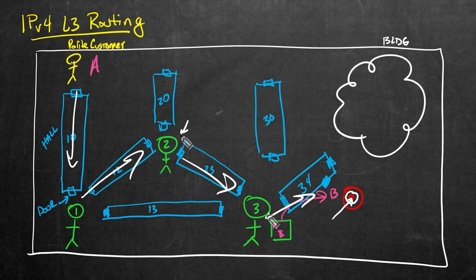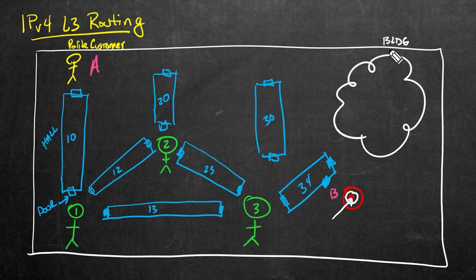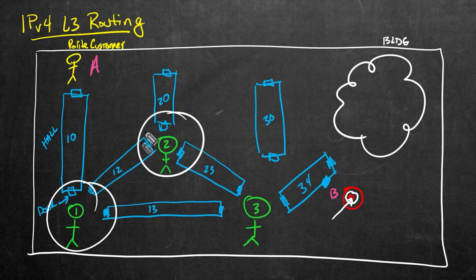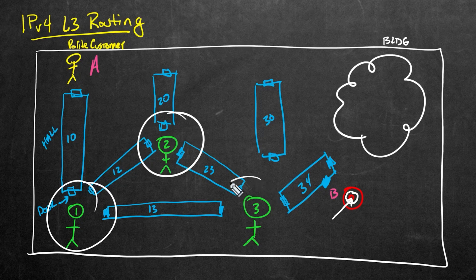If employee two didn't know that employee three was the correct next employee to hand it to, that could cause a problem — employee two could say: I'm not sure who to hand it off to, so I'm going to drop it or throw it in the trash. Each of these employees has fairly limited information. Employee number one has a door from their office to hall 10, hall 12, and hall 13 — and by default, that's all they know about unless they get a map or some other information. Employee number two knows about hall 20, hall 12, and hall 23, but it's not going to know about hallways 30 or 34 because it's not directly connected to those. Similarly, employee number three knows about hall 13, hall 23, and hall 34, but doesn't know about hall 10 or hall 12 because its office doesn't have a door directly to those hallways.